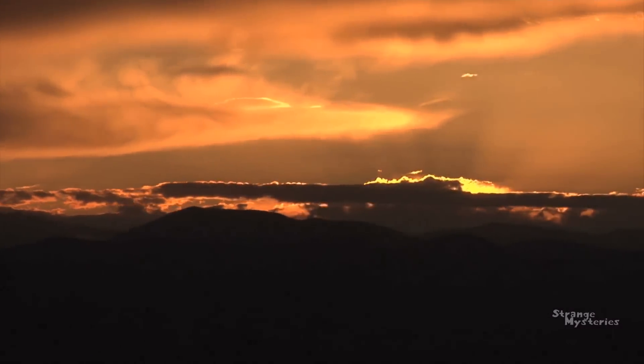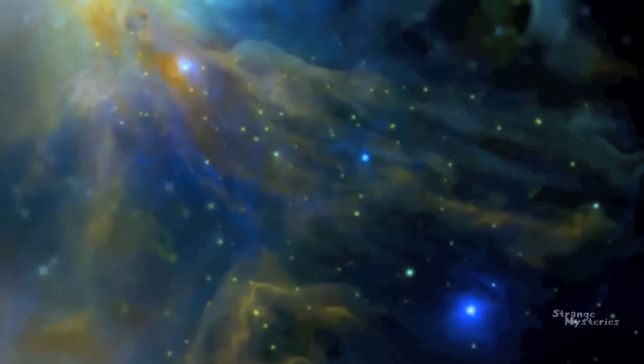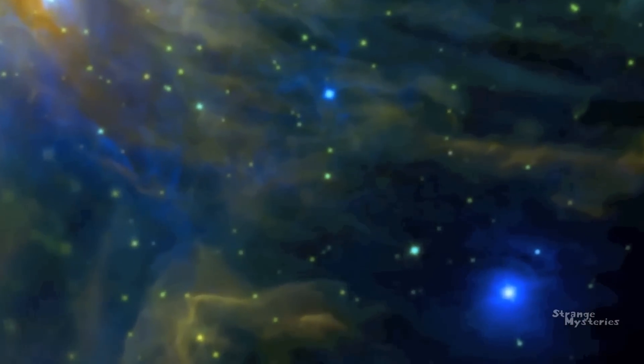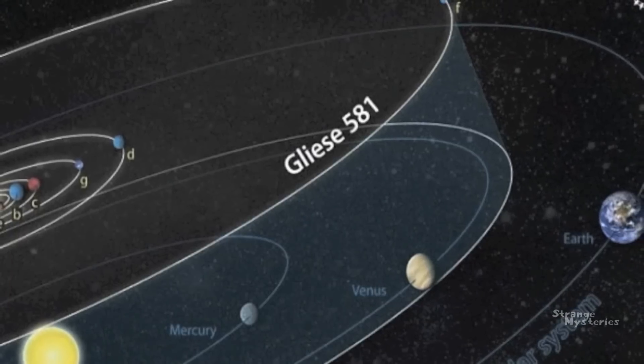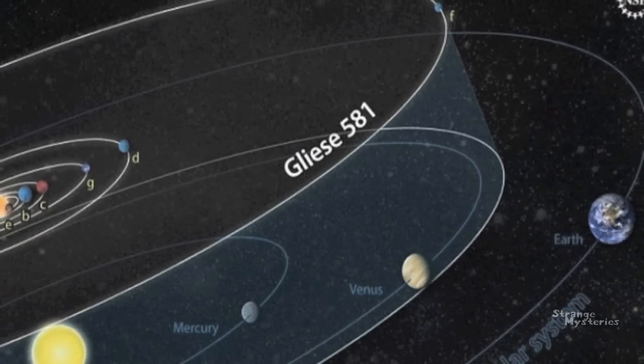In 2005, a string of 6 planets were detected orbiting the star and were named Gliese B, C, D, E, F, and G.